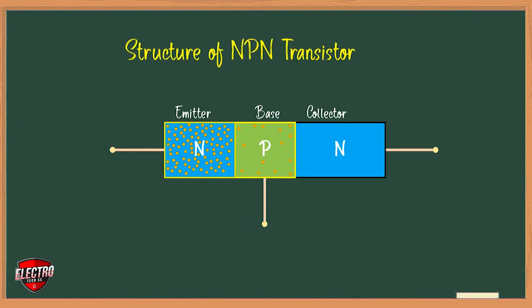Next one, that is collector. It forms the right-hand side section of the transistor, and its main function is to collect majority charge carriers through the base. In most transistors, the collector region is made physically larger than the emitter region because it has to dissipate more power.